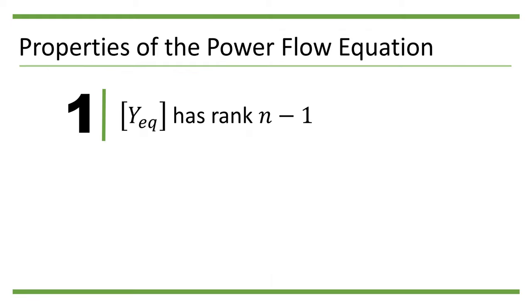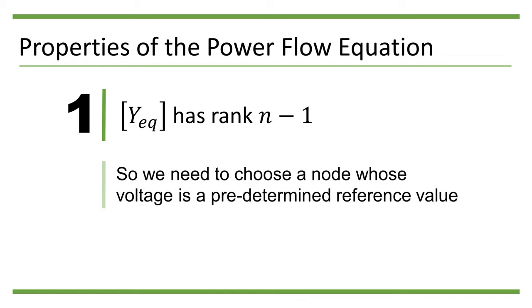For a well-connected power network, the node admittance matrix YEQ has rank n-1, where n is the number of nodes in the power system. So to solve a power flow equation, we need to choose a node whose voltage is a predetermined reference value. This node is usually called the slack bus.